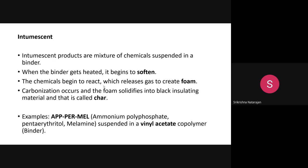The next chemical is called intumescent. Intumescent is a product where a mixture of chemicals is suspended in a binder. Previously discussed phosphorus or chlorine-based compounds are not suspended in a binder, but intumescent is a different type of product — a mixture of chemicals suspended in a binder. When used as a coating over materials like wood, paint on walls, textiles, or polymers, when heated it begins to soften.